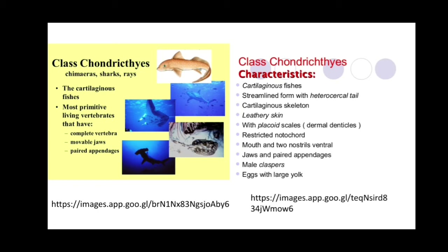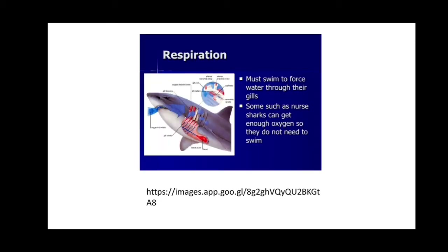Class Chondrichthyes includes Chimera, sharks, and rays — these are cartilaginous fishes and are the most primitive living vertebrates that have complete vertebrae, movable jaws, and paired appendages. Characteristics include: cartilaginous species, streamlined body with heterocercal tail, cartilaginous skeleton, leathery skin, placoid scales also known as dermal denticles, restricted notochord, mouth with two nostrils, ventral jaw, and paired appendages. Males have claspers and eggs have a large yolk.